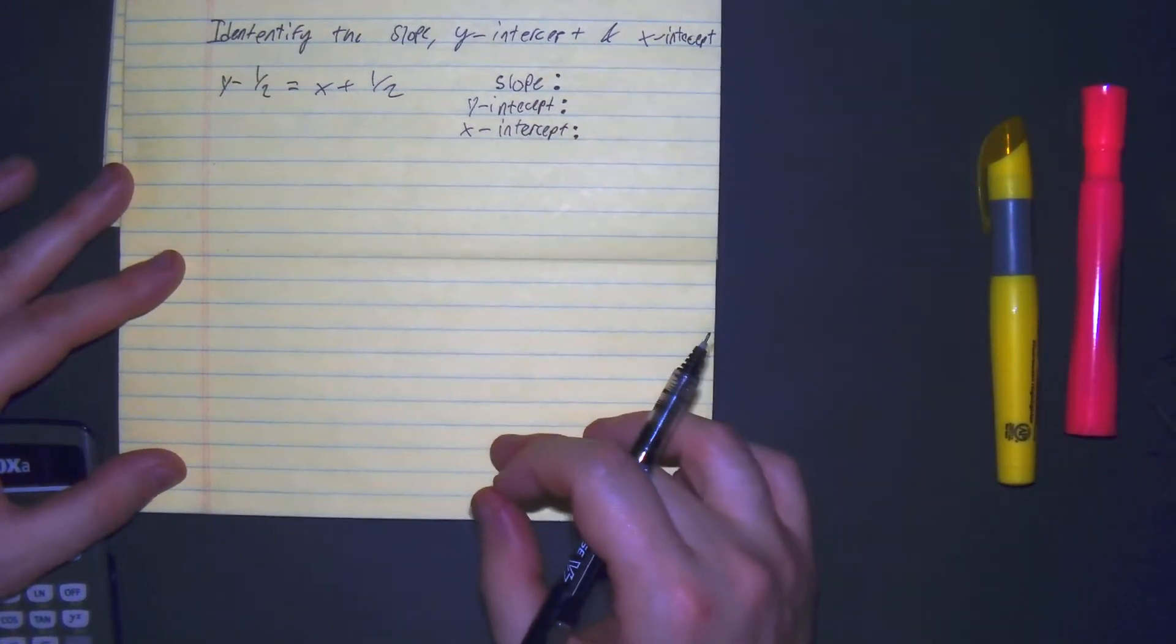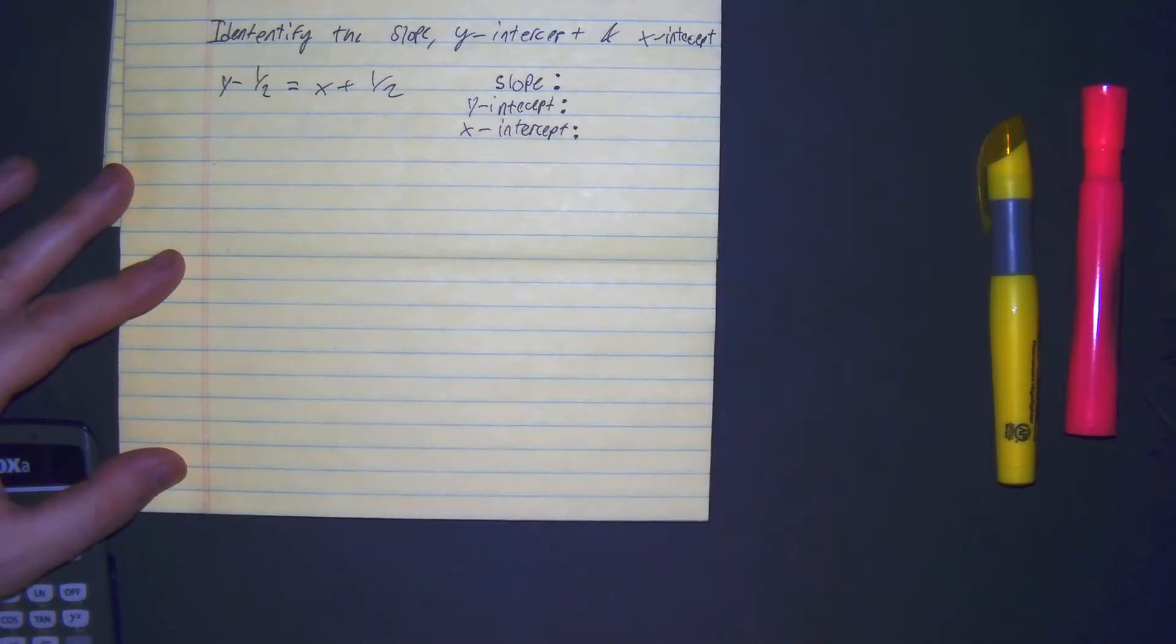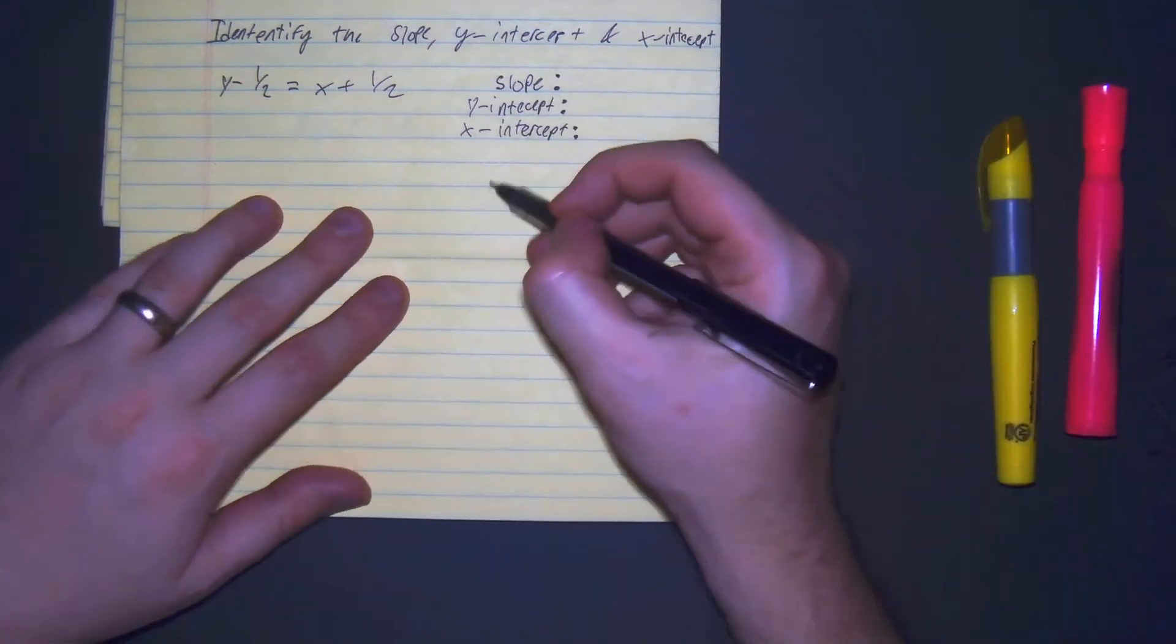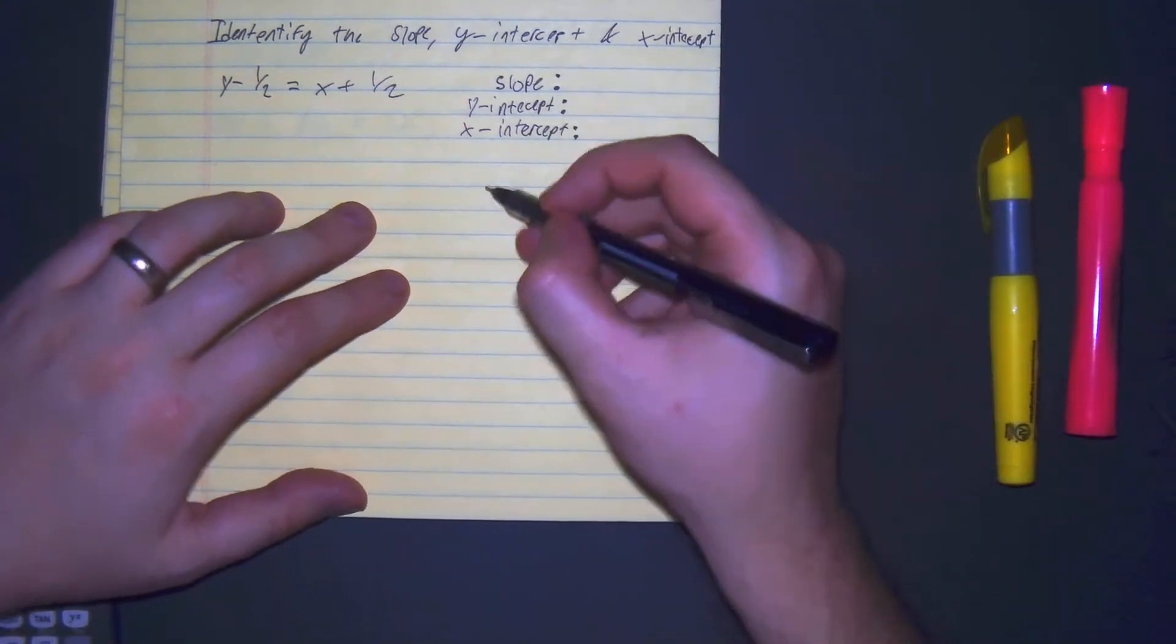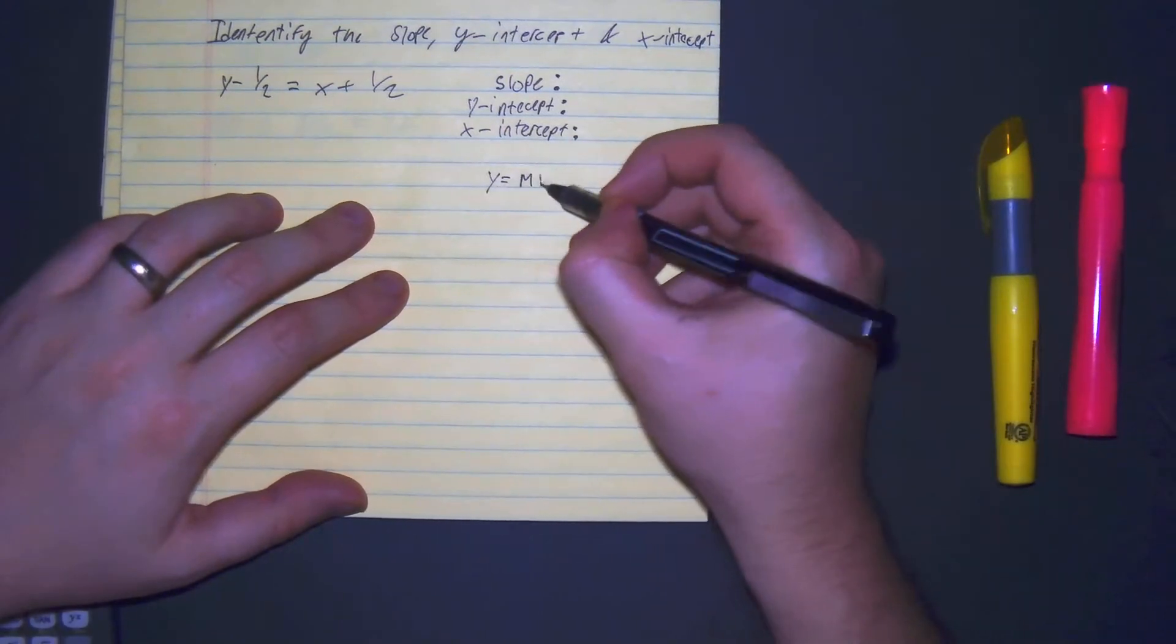So I believe the best way to do this is to use, or put this into slope-intercept form, which is y equals mx plus b.